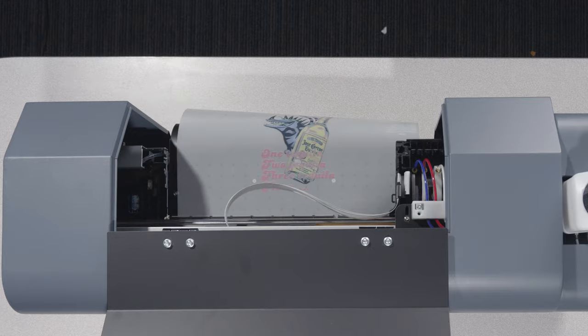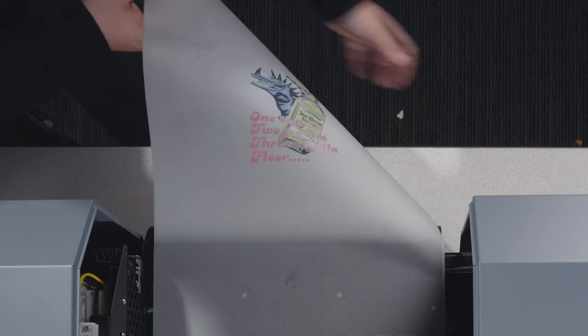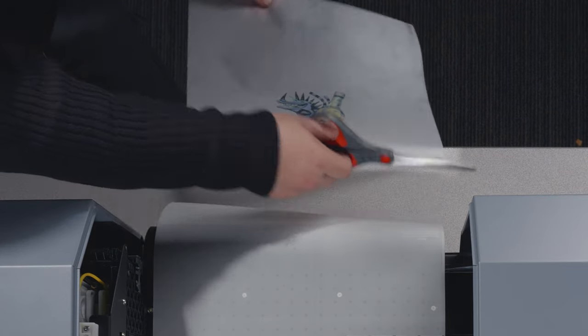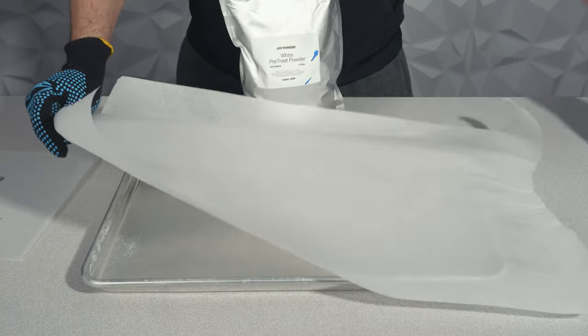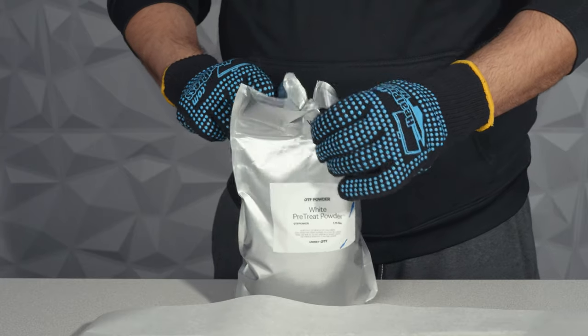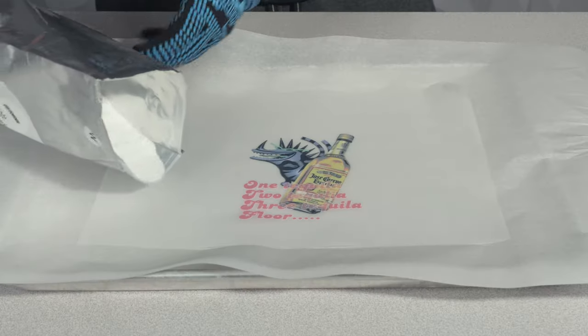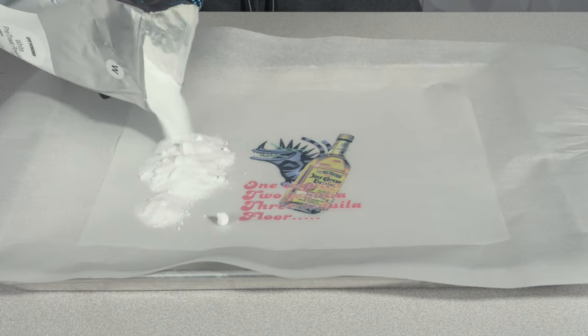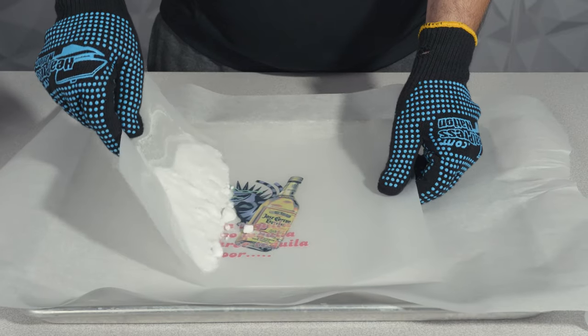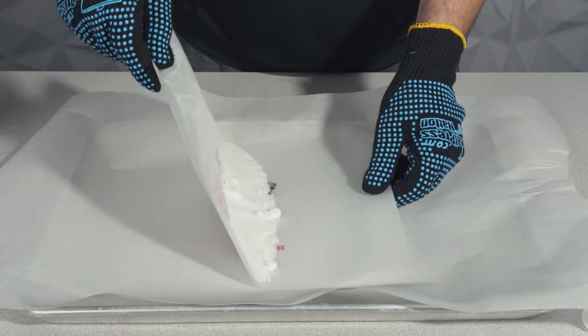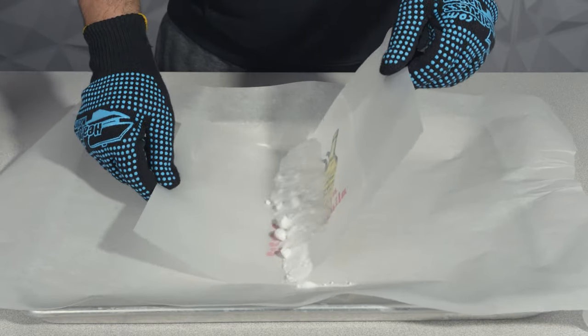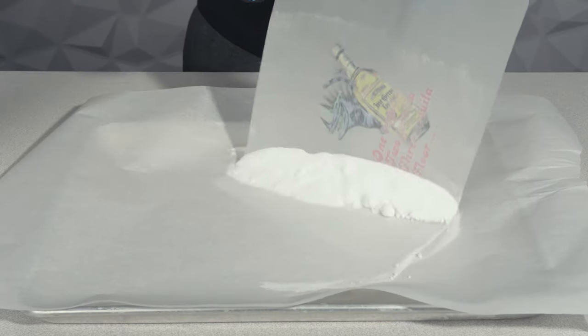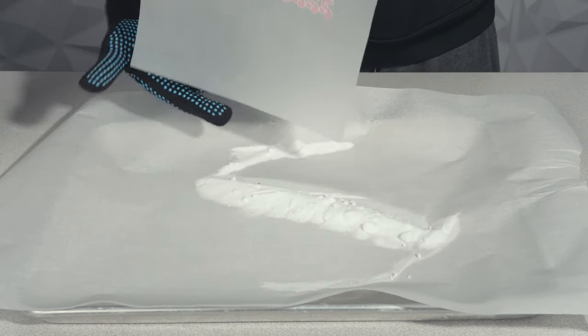Once your print is complete, you'll want to immediately apply the powder adhesive to the wet ink. Pour the powder over your print so it's completely covered, then shake off all the excess powder back into your tray for reuse in the future. On a side note, you'll probably want to invest in some basic PPE for handling the fine powder adhesive.